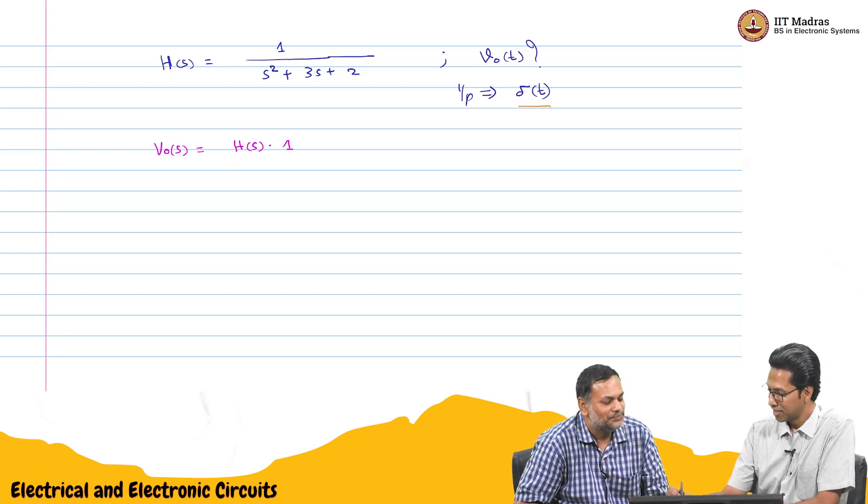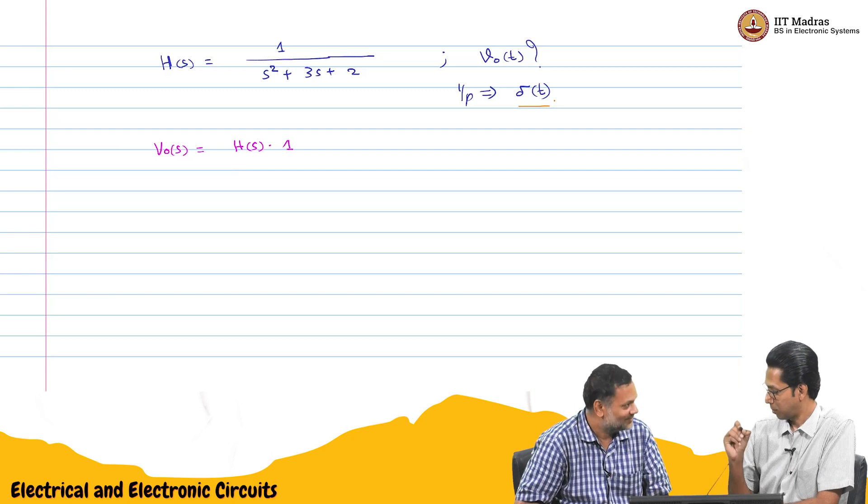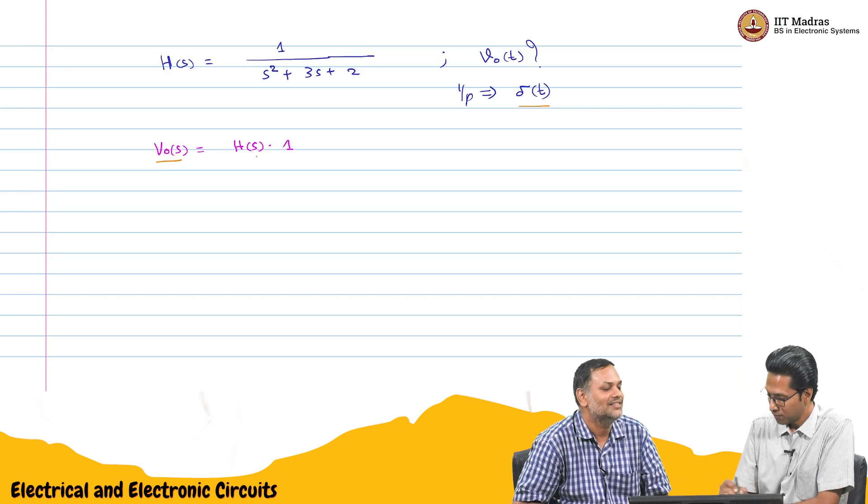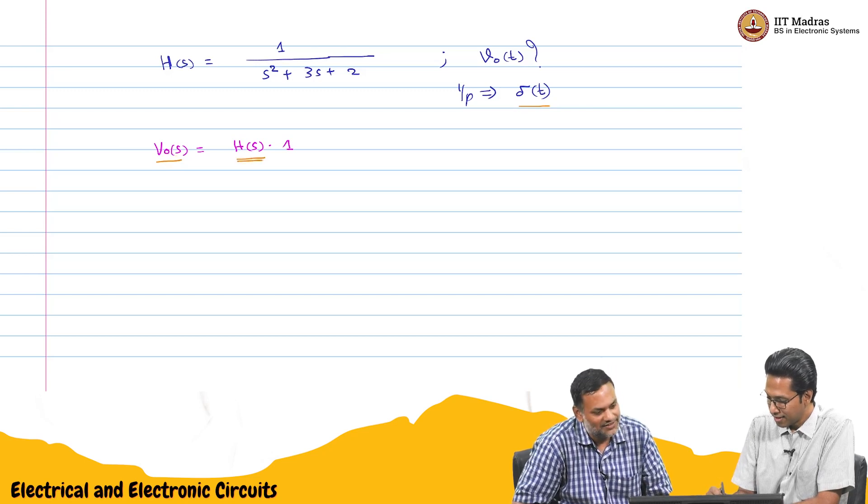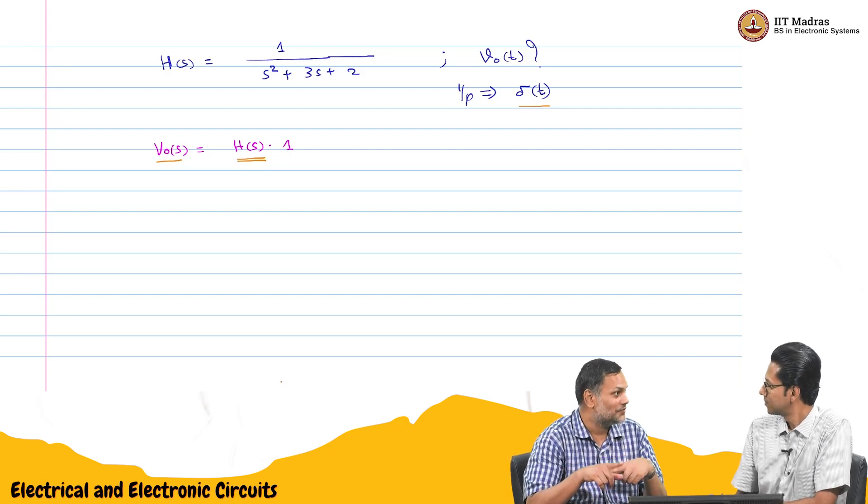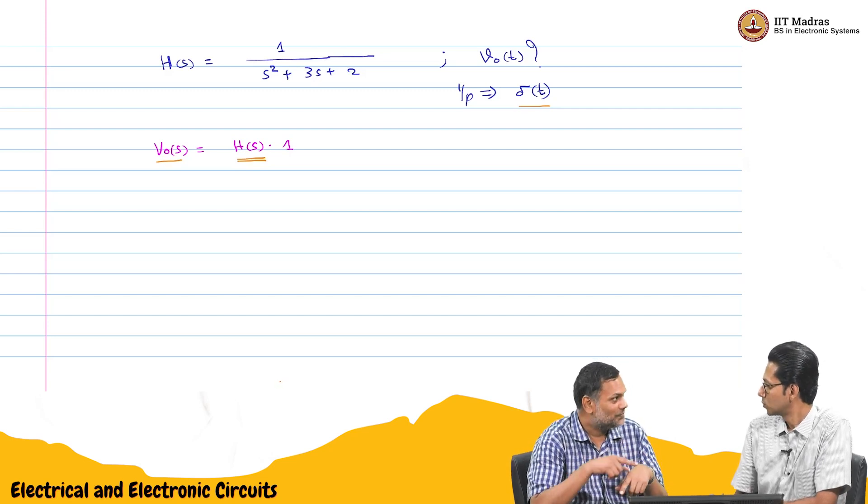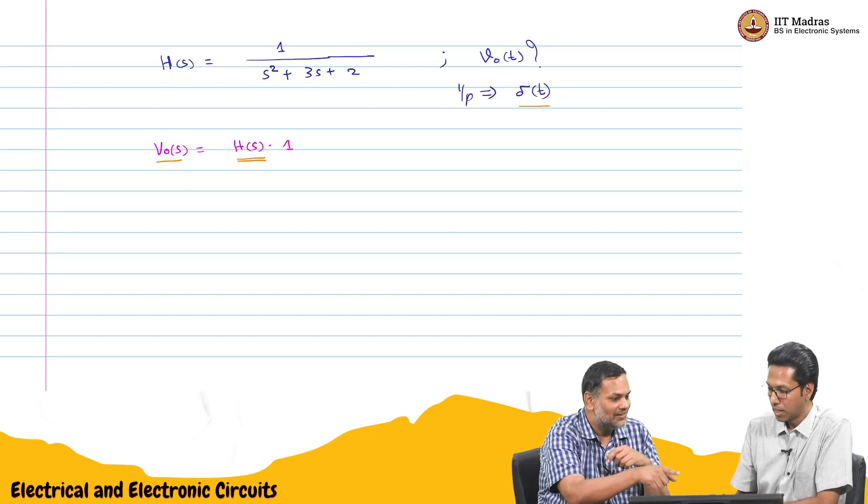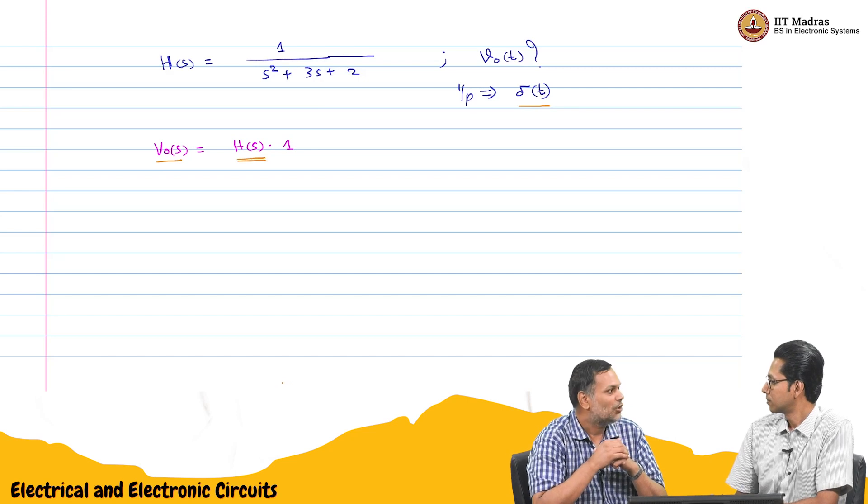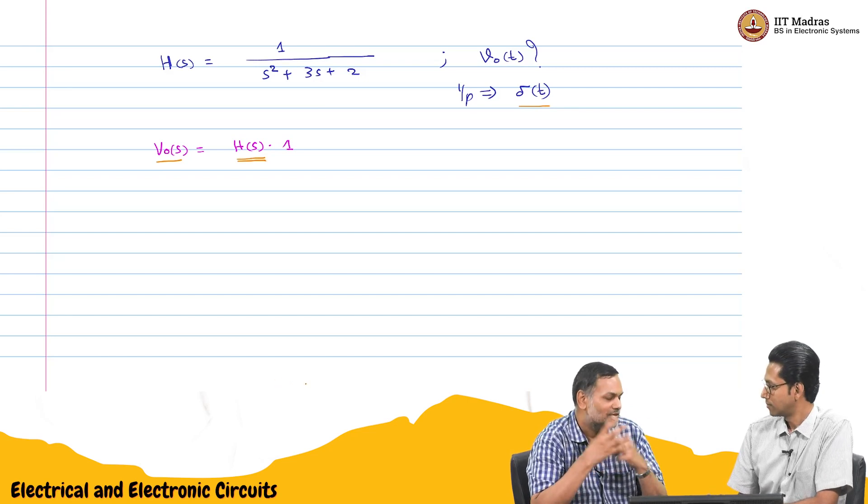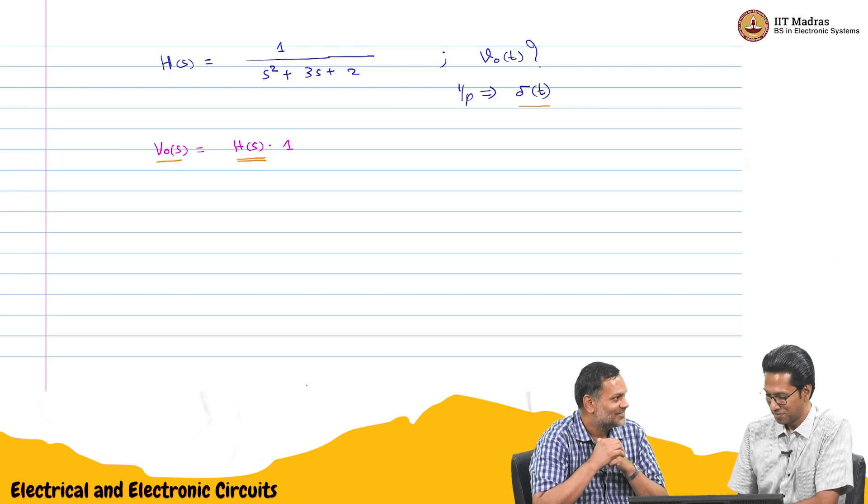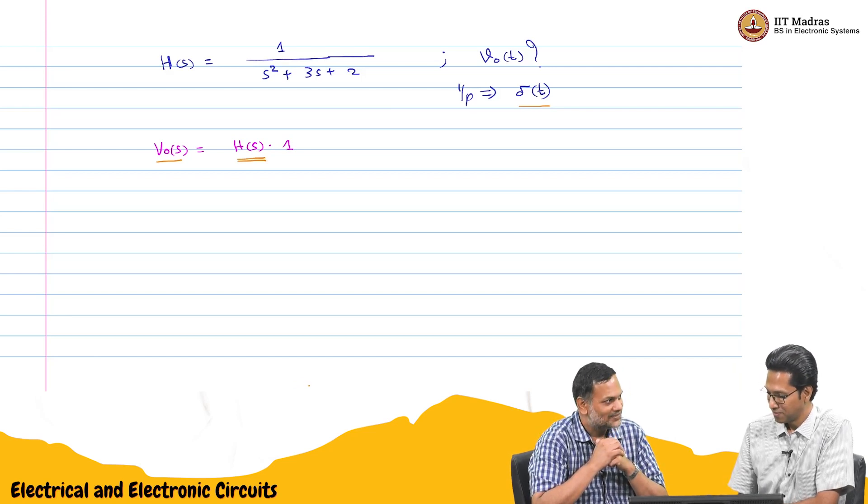So, when we are applying this input, when the input is impulse, whatever output we are getting is H of s, the transfer function itself. Which means v out of t will now become the inverse Laplace transform of H of s. Shall we call it a small h of t? We need to find a name for that also.